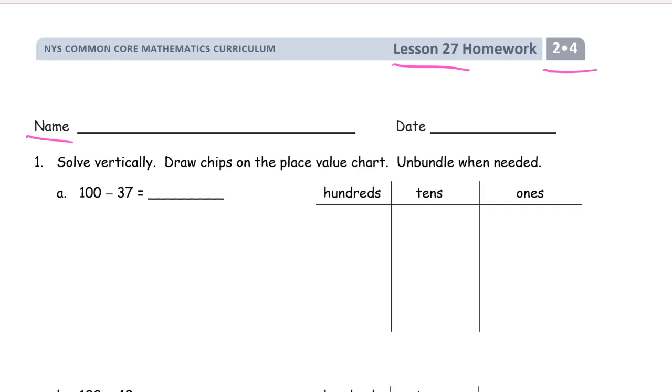So it's 100 minus 37. I don't have enough ones to subtract 7 ones, so I have to unbundle a 10 and I don't have any 10s. Oh no, what do I do? Well, I have to use what I have, so I have to unbundle a 100. When I do that, I'll have 10 tens. And now I can unbundle a 10. So there. I'll have 9 tens left. And now I'll have 10 ones.